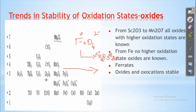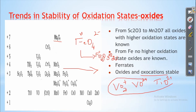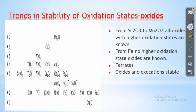Other than simple oxides, oxo-cations are also stable. For example, the vanadium oxide cation VO₂⁺ and titanium oxide cation TiO²⁺ are stable. There are also mixed oxides having an average oxidation state of 8/3. For example, the oxidation state of manganese in Mn₃O₄ is 8/3, and similarly for iron in Fe₃O₄ and cobalt in Co₃O₄. These are called mixed oxides.